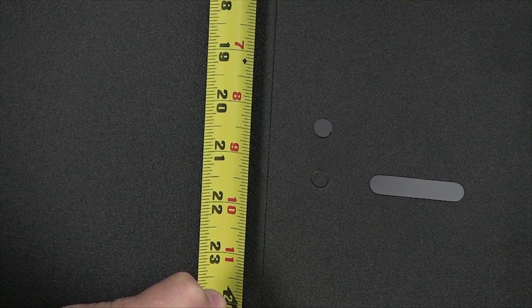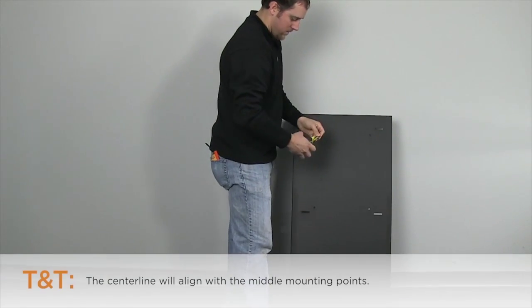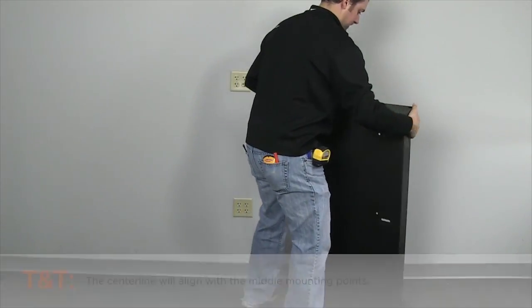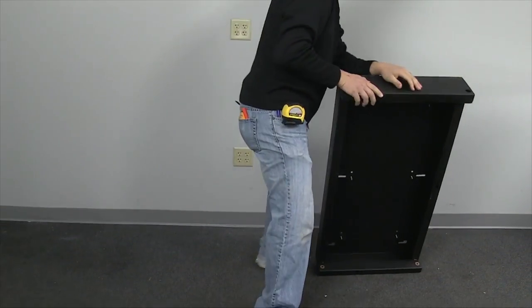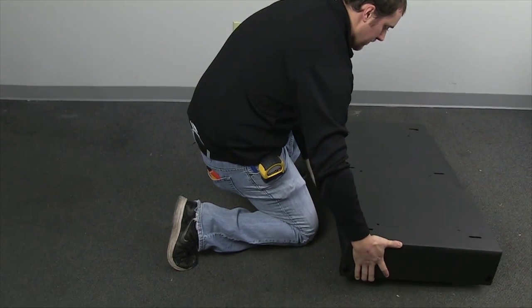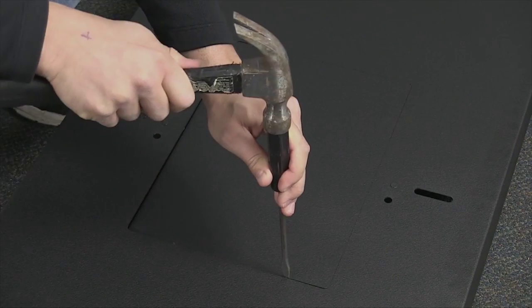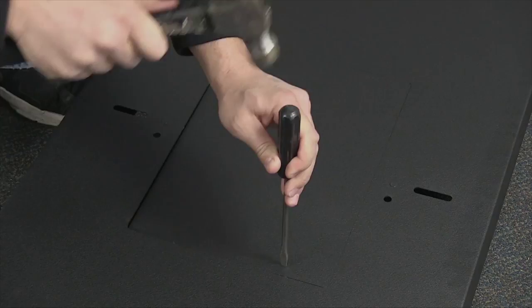Measure down from the top edge of the rear rack section. Once the measurement is made, lay the rack down on its face. Using a hammer and flathead screwdriver, knock out the removable rear access panel as shown.